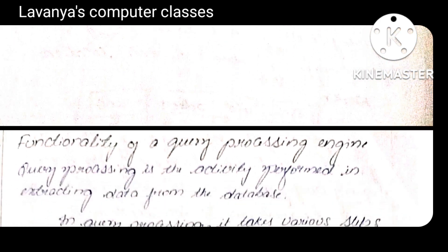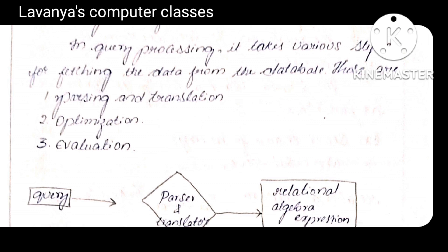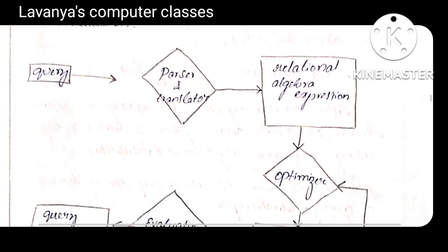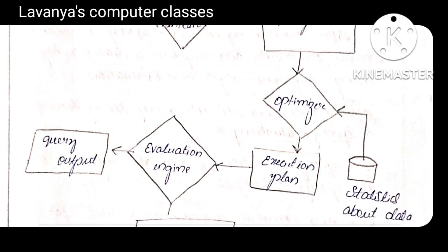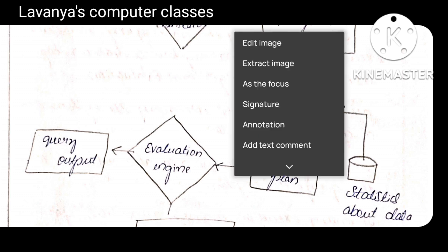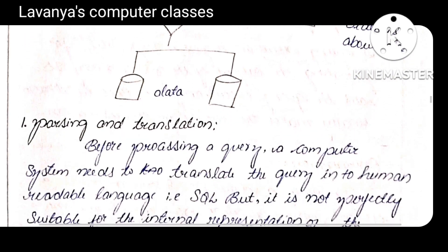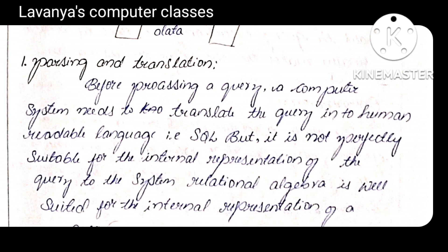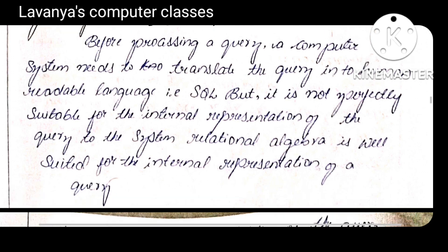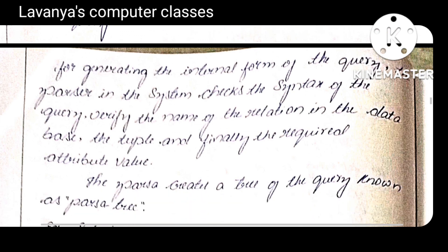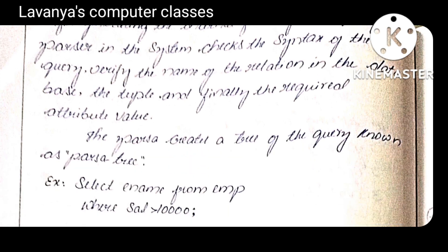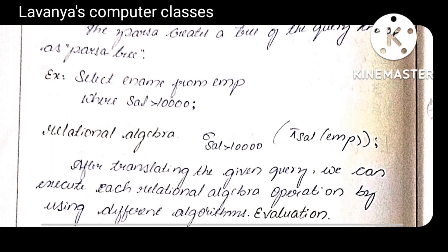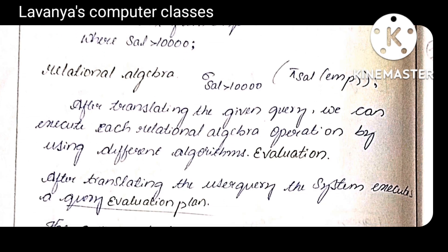Next one is query processing engine — this question has already appeared in previous question papers. In the query processing engine, there are three steps: parsing, optimization, and execution. In SQL, to execute an SQL query — all statements are written in SQL language. SQL is a non-procedural language, meaning it explains what to write but not how to execute it. So all SQL statements are converted into relational algebra. Relational algebra is an example of a procedural query language.